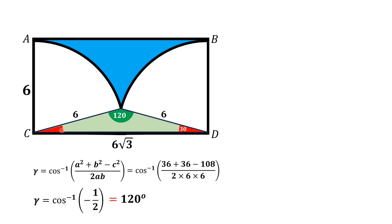So this angle is 30 degrees and similarly this angle is 30 degrees. This means the remaining angle at the rectangle's corner is 60 degrees. In the same manner, the remaining angle at vertex C is also 60 degrees.